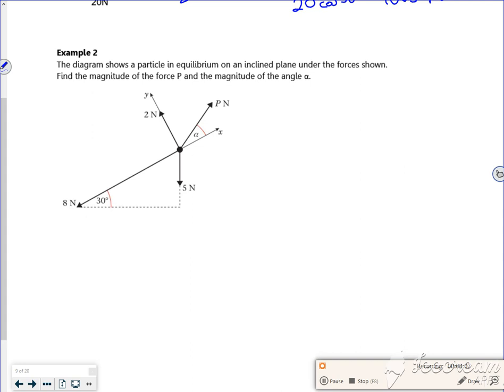So it says a diagram shows a particle in equilibrium. So remember, if it's in equilibrium, my acceleration is zero. So if I use F equals mA, it's equal to zero.